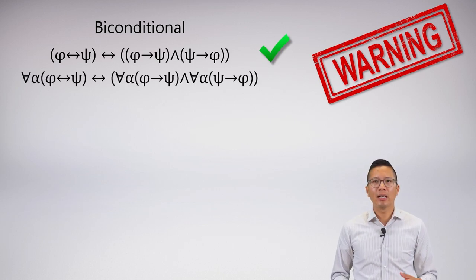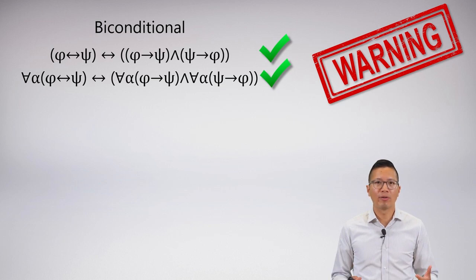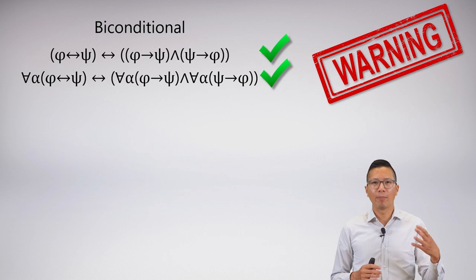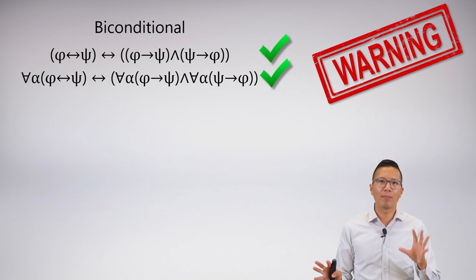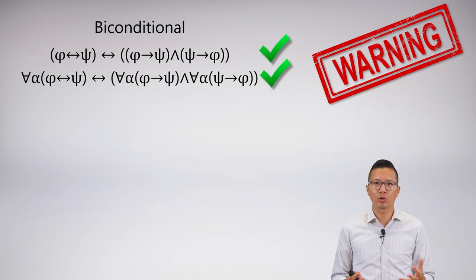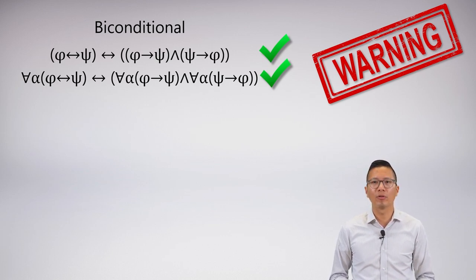Now what happens is if I have a universal quantifier in front? For all alpha or for all x, it doesn't really matter, phi biconditional psi, can I just split it up into two universal statements with a conjunction? Yes, you can. There's nothing wrong with that, that's perfectly logically equivalent.